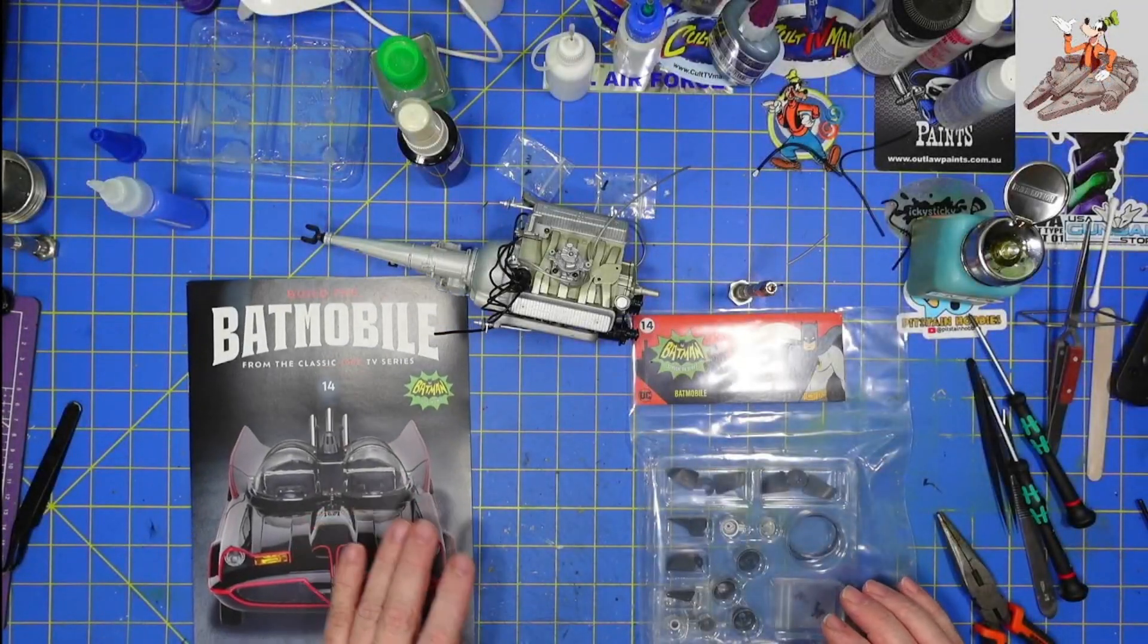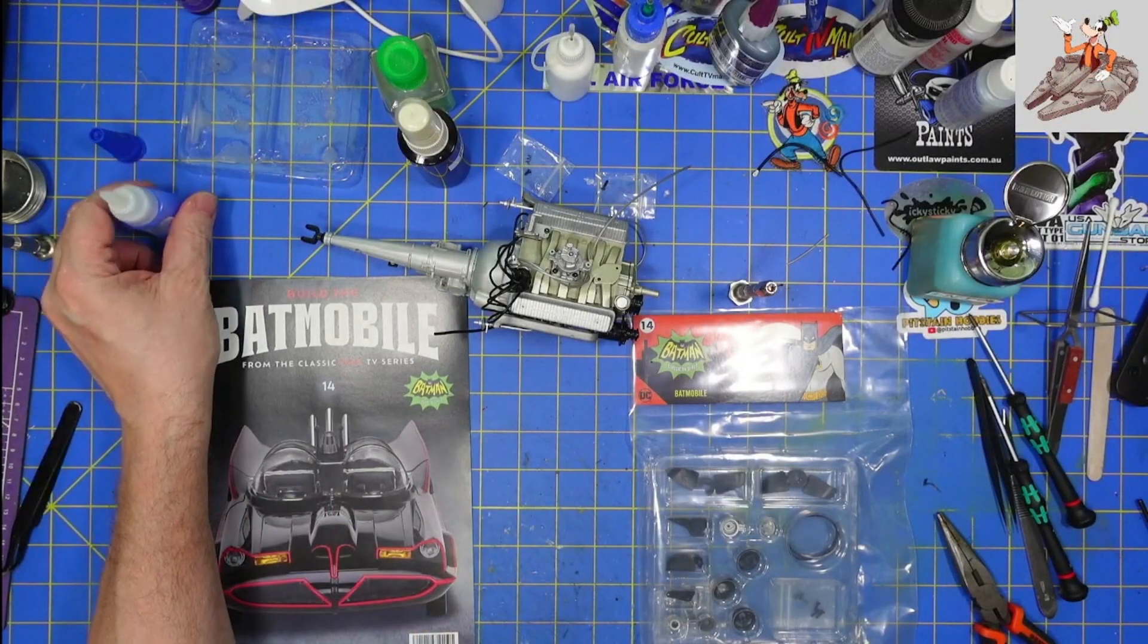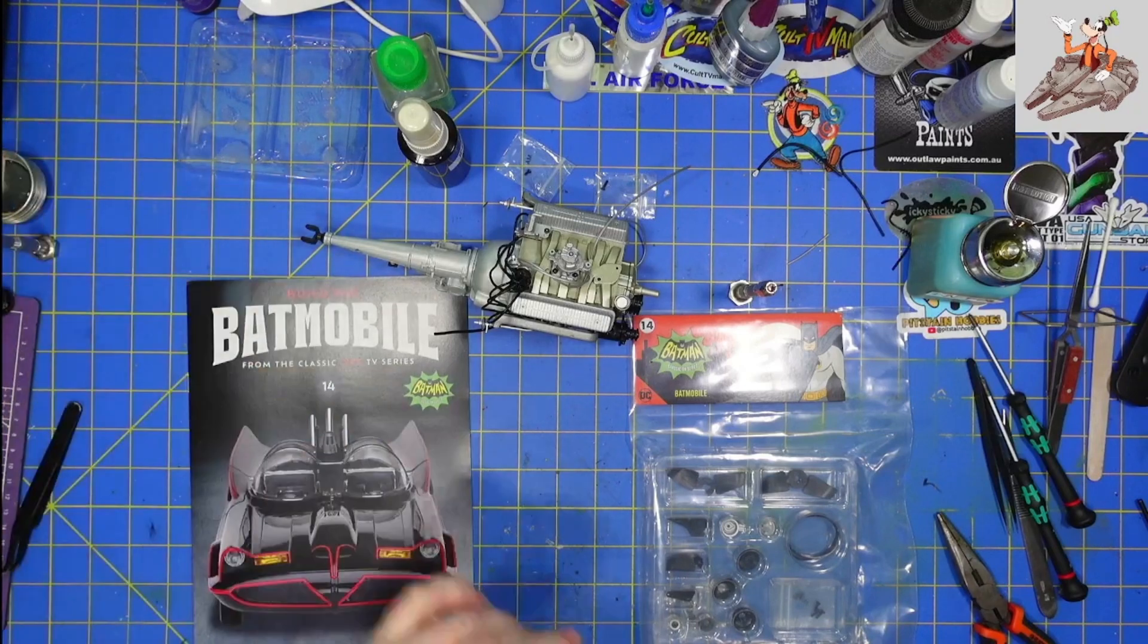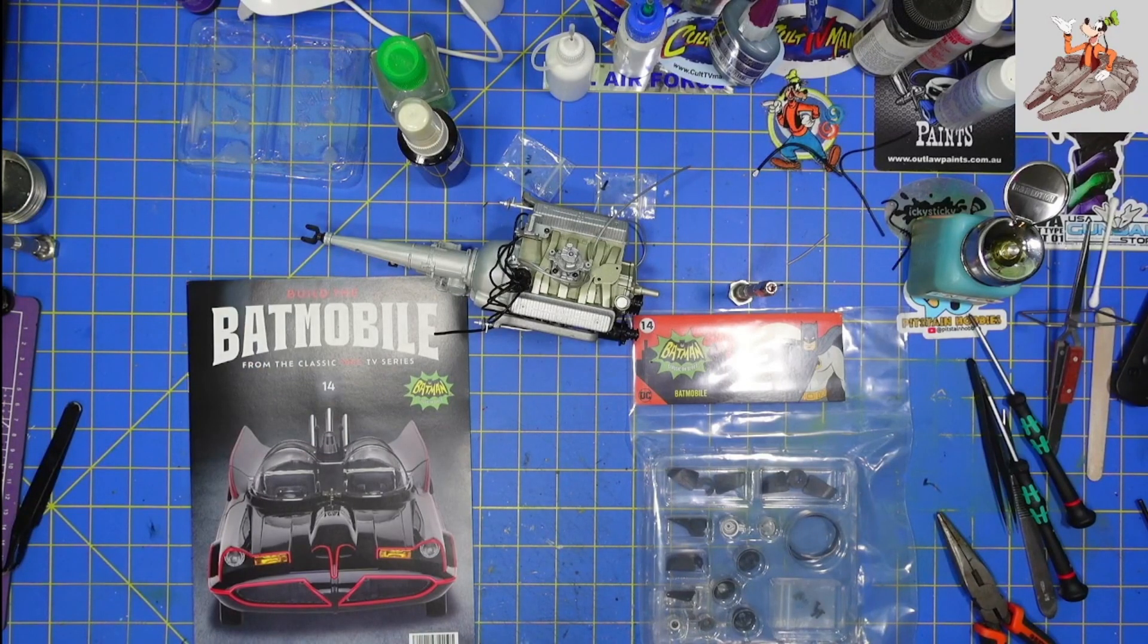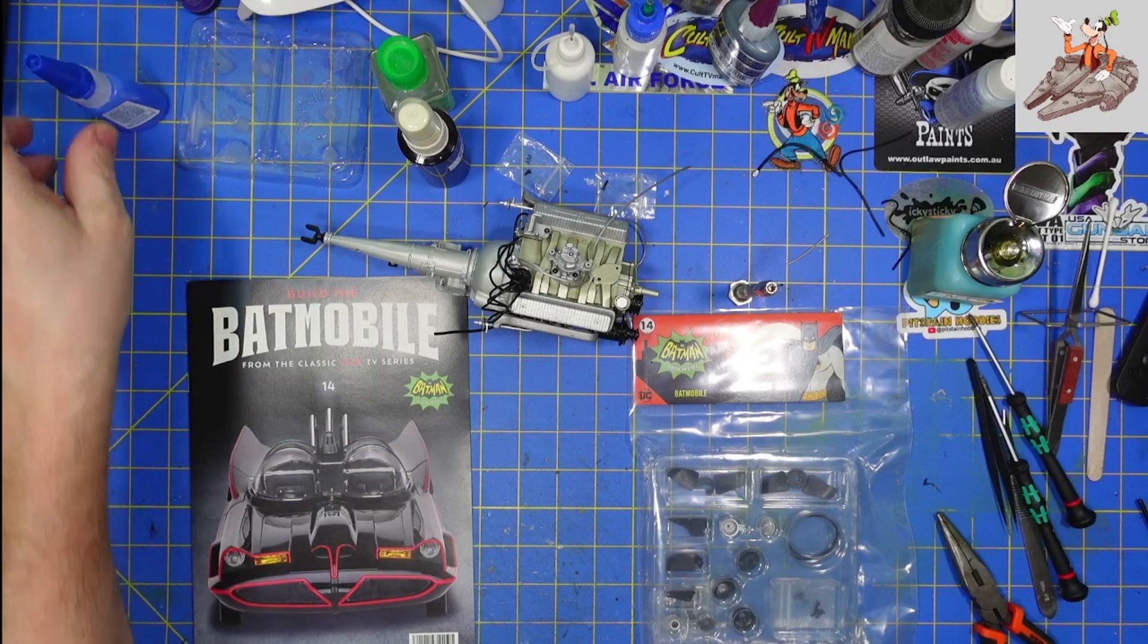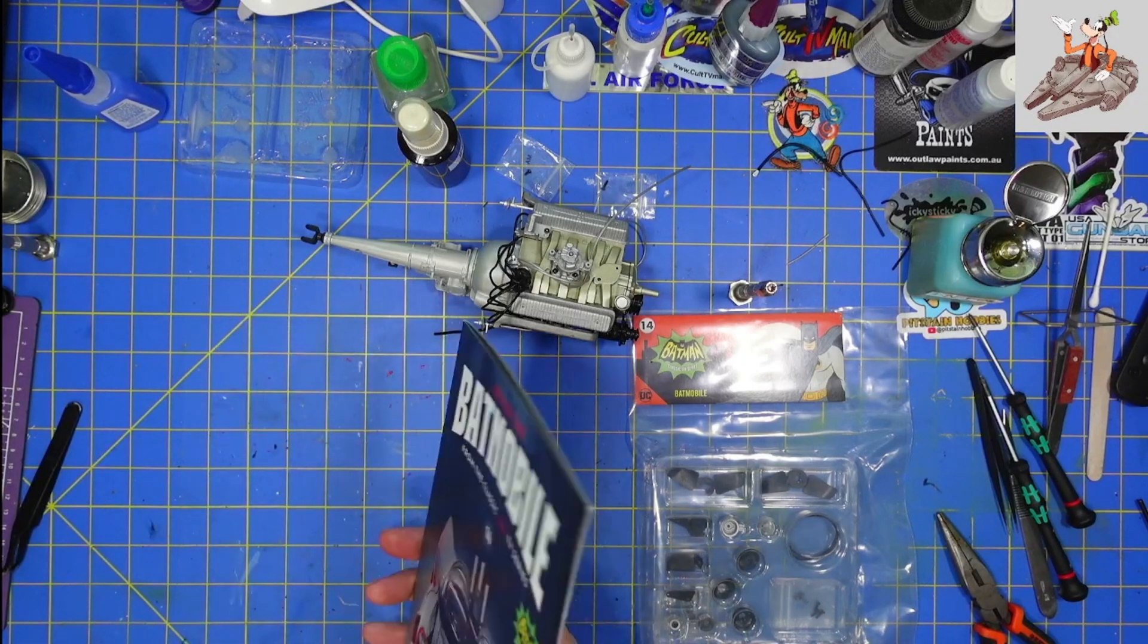Hello and welcome to Buckman's Model Mania. Today, we're going to be working on stage 14 of the Batmobile from the 1966 TV series. This is released by Fan Holmes and D'Agostini.